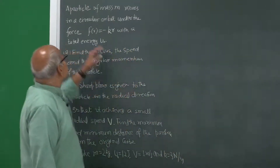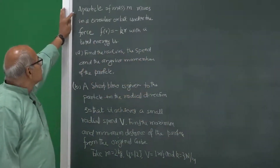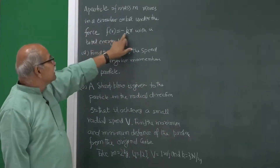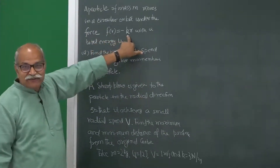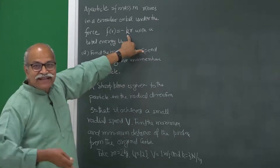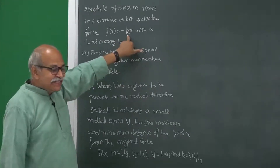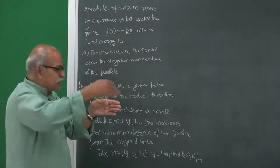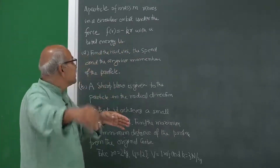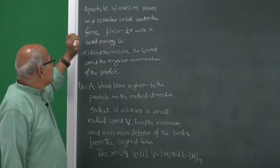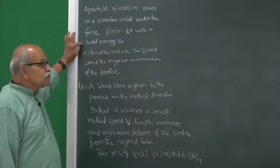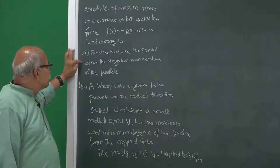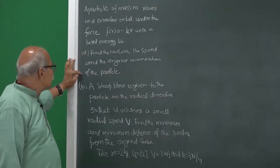This is our question: a particle of mass m moves in a circular orbit under the force F(r) equal to minus k r. This is a spring-type force — in the Kleppner book a figure is given where a spring is attached to the mass and this kind of force is applied — with a total energy u naught. Find the radius, the speed, and the angular momentum of the particle.